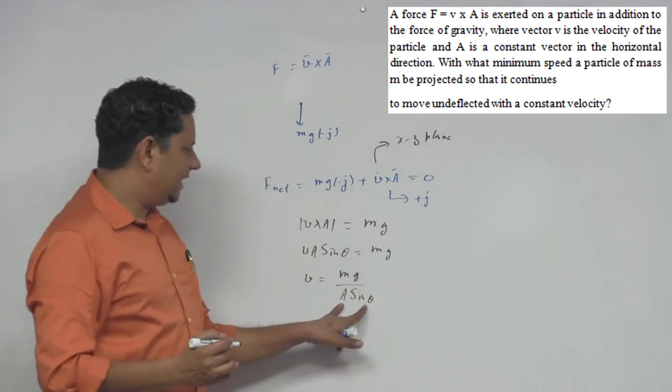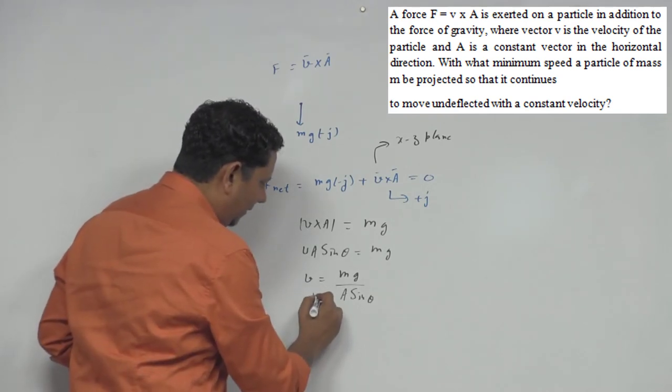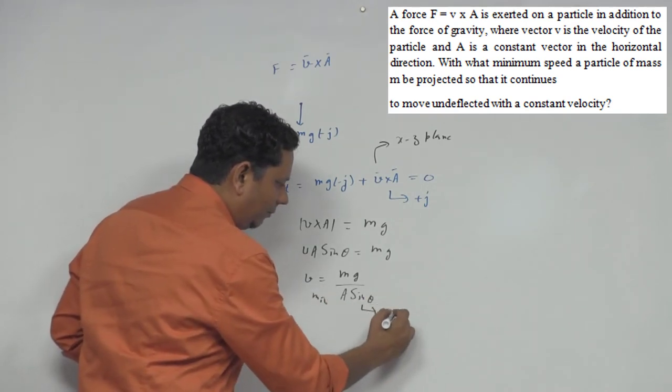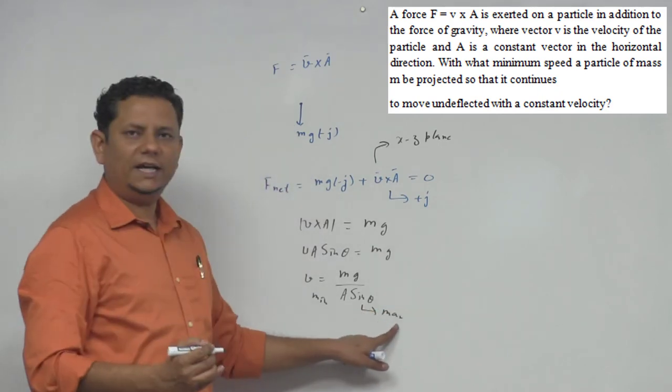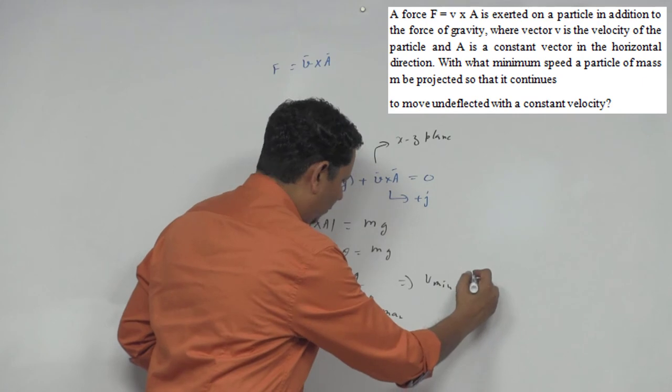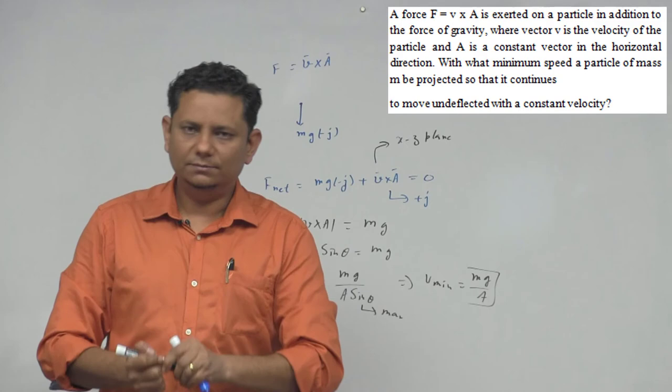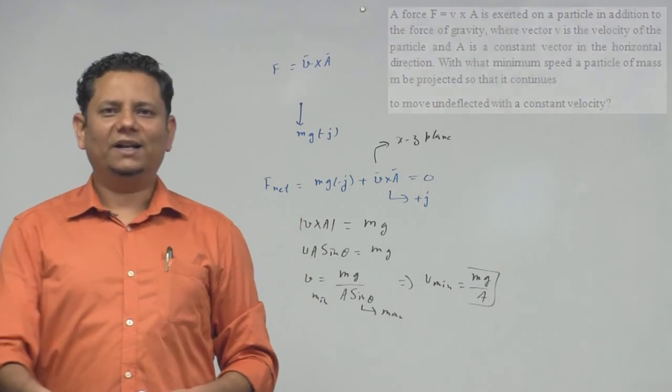Now if we talk about V minimum value, V minimum occurs when A sin θ is maximum. Which implies V minimum equals mg divided by A. So this would be our final answer.